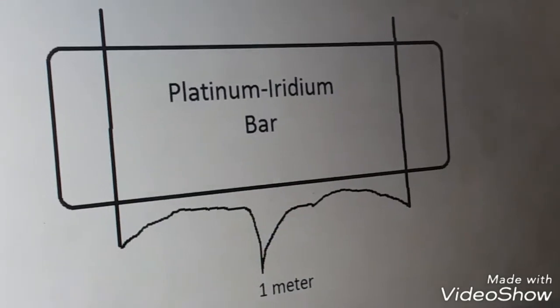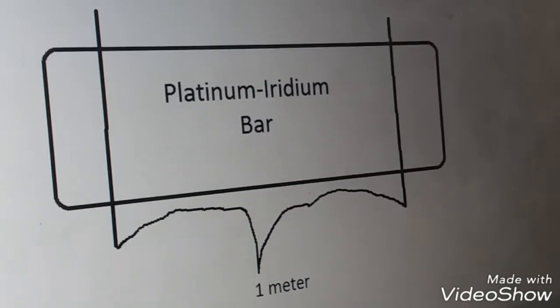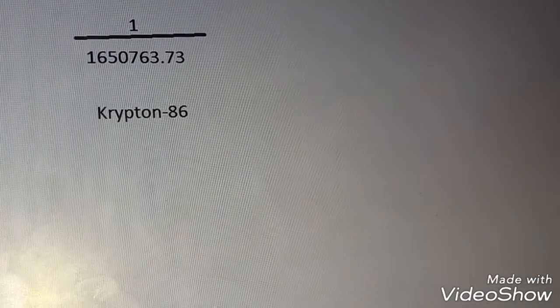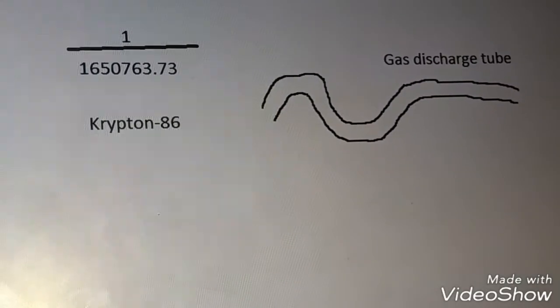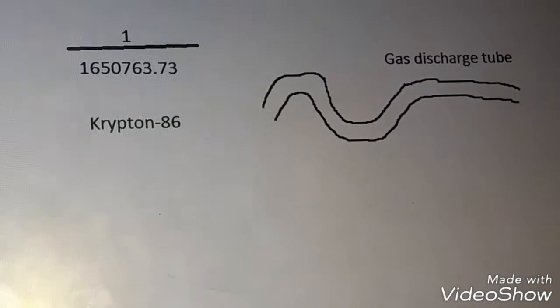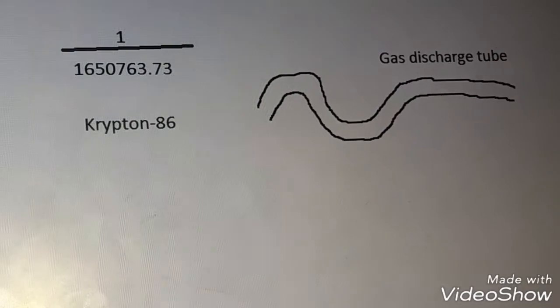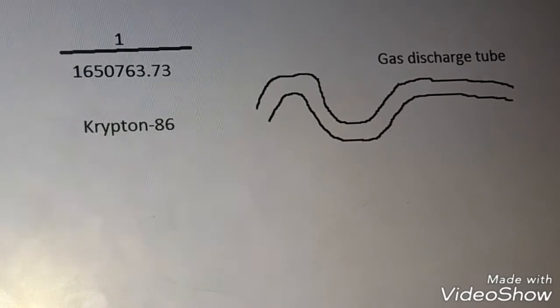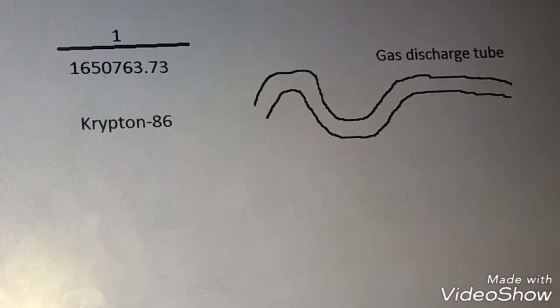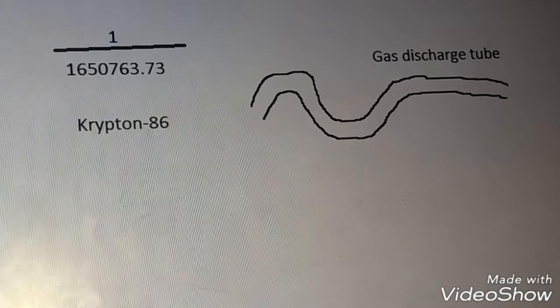In 1960, a new standard for the meter based on the wavelength of light was adopted. Specifically, the standard for the meter was redefined to be 1,650,763.73 wavelengths of a particular orange-red light emitted by atoms of krypton-86 in a gas discharge tube that can be set up anywhere in the world.